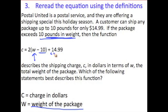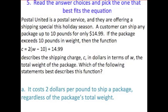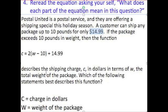Since C stands for the total charge, that means the $14.99 must be the $14.99 that you're always being charged. So, after we've read the problem and re-read the equation using the definitions, we move on to discussing what each part of the equation means. The total charge of the package equals 2 — so twice — the total weight of the package, minus 10 pounds, plus $14.99 which we were charged initially. Once you understand the equation, we can get on to the multiple choice portion.